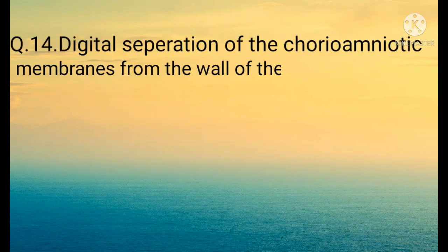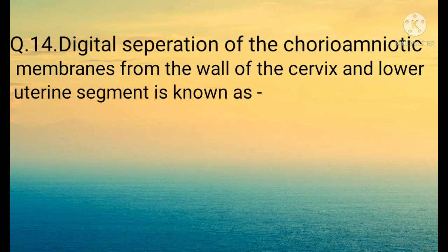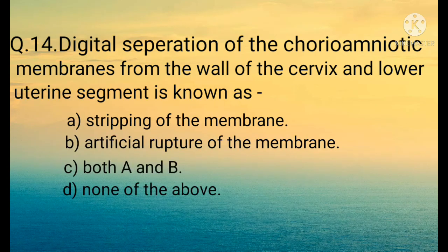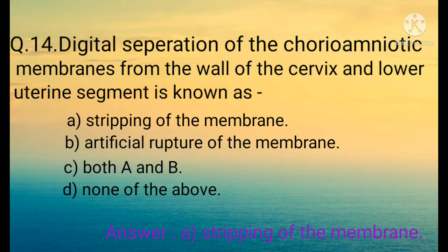Question number fourteen: Digital separation of the chorioamniotic membrane from the wall of the surface and lower uterine segment is known as — Option A: Stripping of the membrane, Option B: Artificial rupture of the membrane, Option C: Both A and B, Option D: None of the above. The correct option is Option A: Stripping of the membrane.